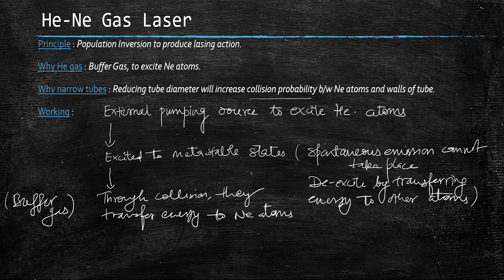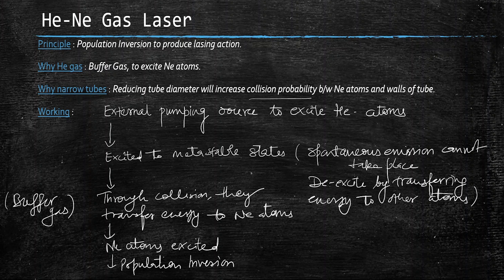Helium transfers its excess energy to the neon atoms. After receiving this energy, the neon atoms get excited. After some time, population inversion takes place, meaning there are more atoms in the excited states than in the lower ground states. The population inversion condition is thus achieved.